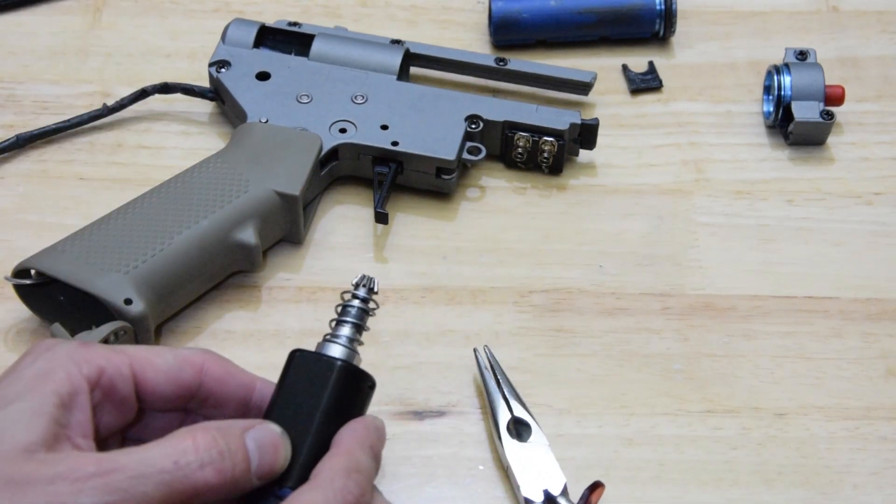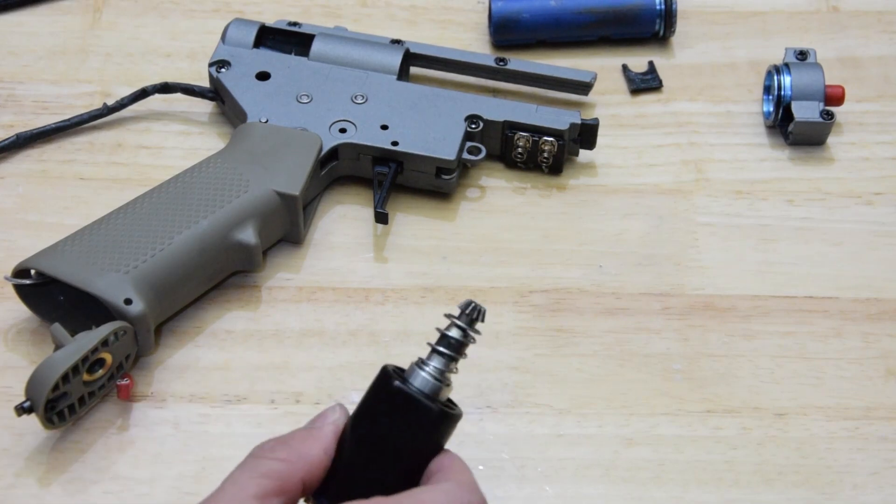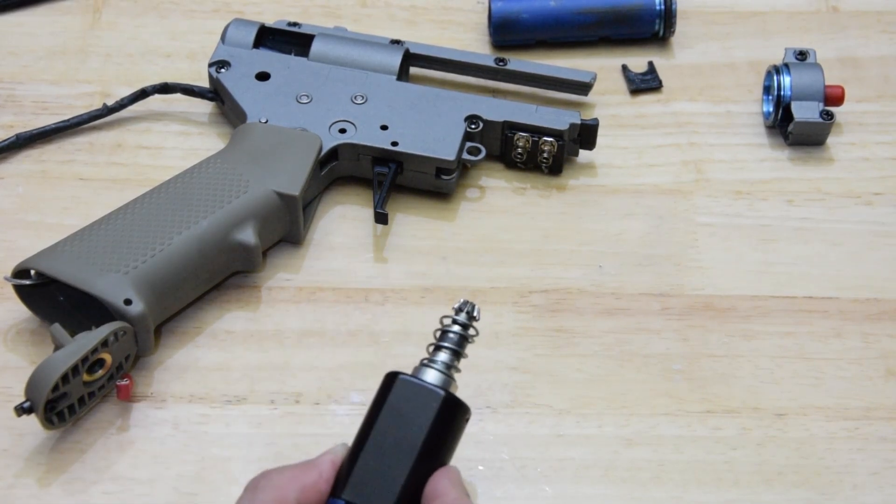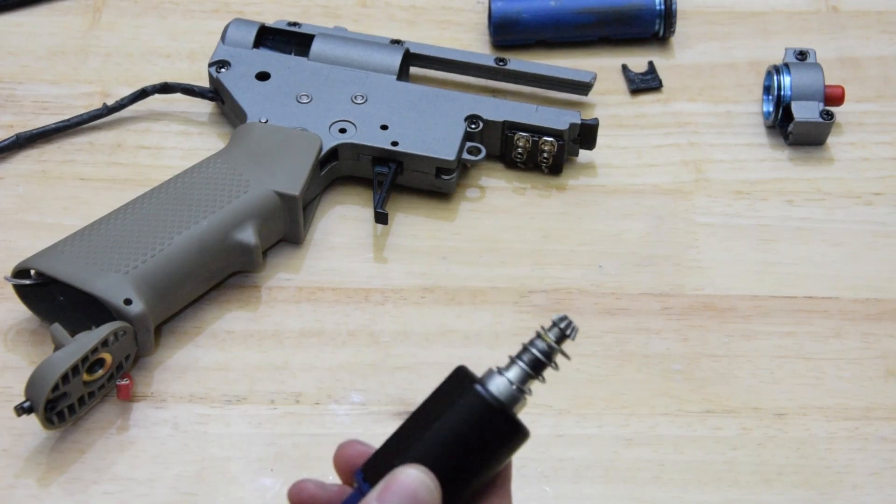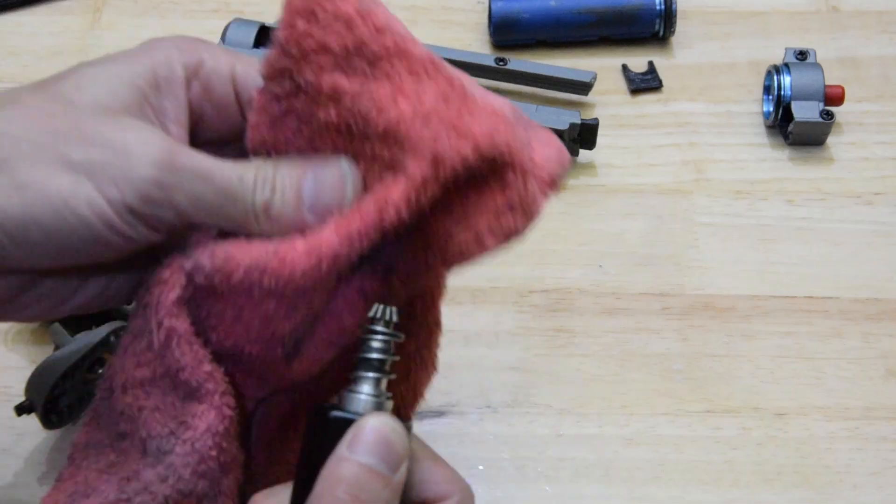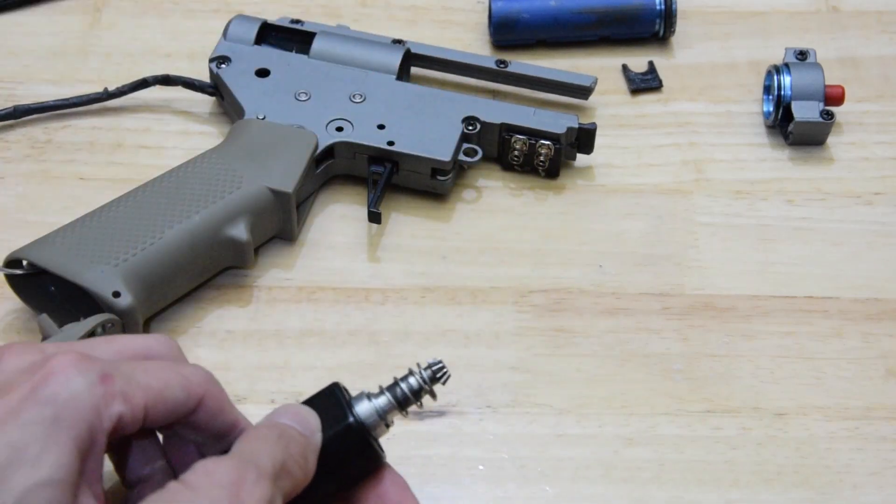It's also worth mentioning, this isn't necessarily a Stock Wells motor. I think someone pointed out this might be a JG motor. I don't know what motor this was. This was just a random motor that was in the bag.